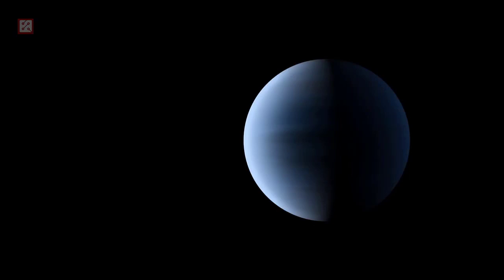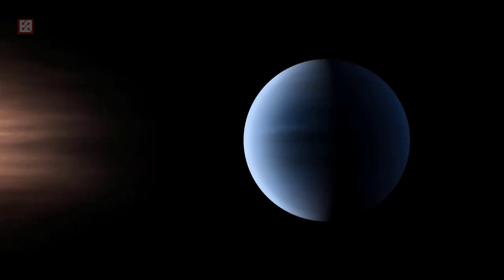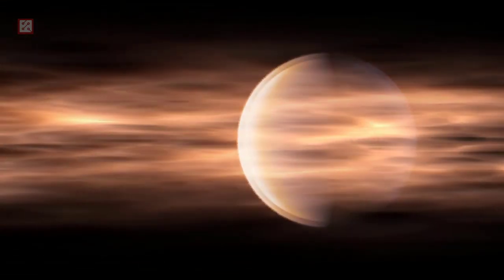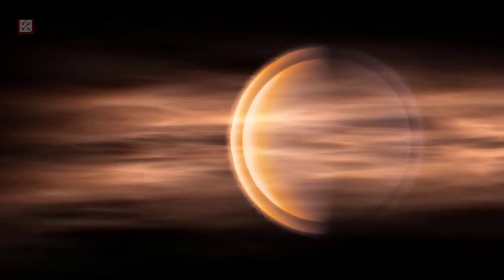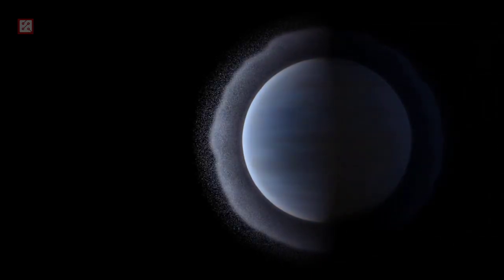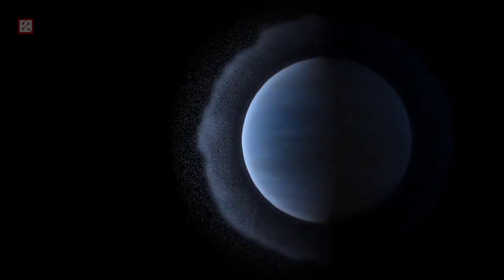The planet is most likely tidally locked, meaning that one side of the planet would have eternal daylight and the other would be in darkness. Ross-128b therefore most likely contains rock and iron, and it was concluded that Ross-128b is a temperate exoplanet in the inner edge of the habitable zone.